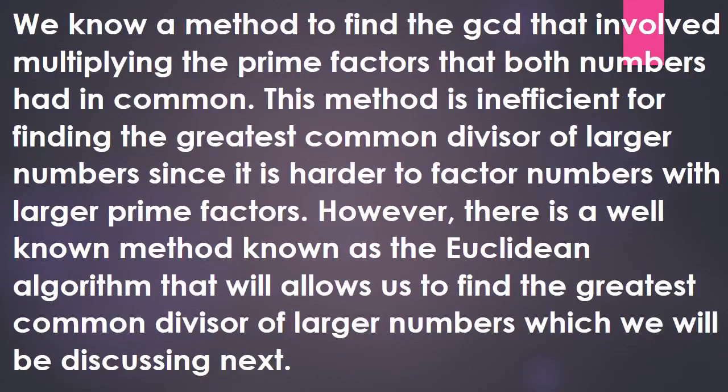Previously, we knew a method to find the GCD that involved multiplying the prime factors that both numbers had in common. This method is inefficient for finding the greatest common divisor of larger numbers, since it is harder to factor numbers with larger prime factors. However, there is a well-known method known as the Euclidean algorithm that will allow us to find the greatest common divisor of larger numbers, which we will be discussing next.